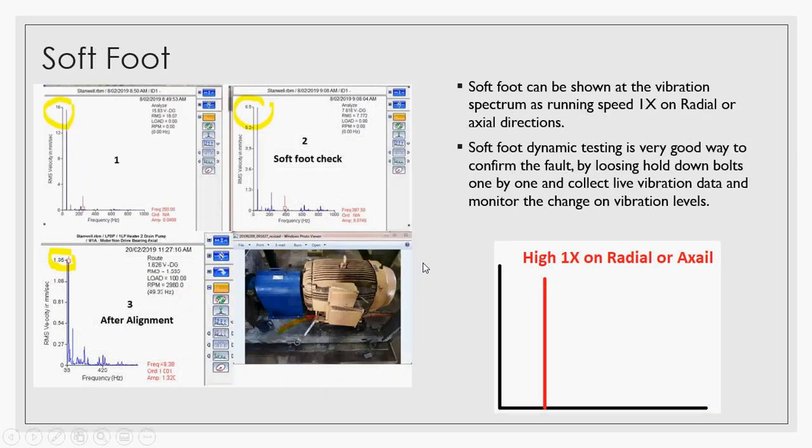Also, you can see high amplitude 1X on the soft foot condition. In the soft foot condition, you can see twice line frequency, and this happens because the soft foot causes air gap variation and it causes rotor eccentricity. But you can also see high amplitude 1X if you have soft foot.